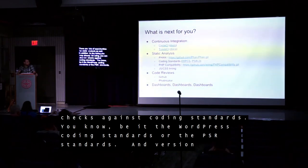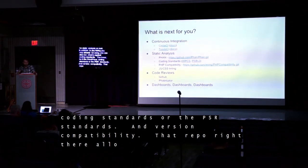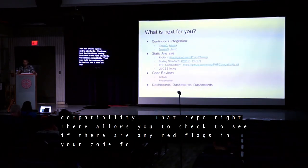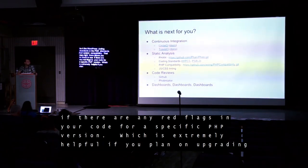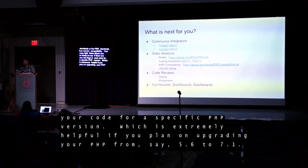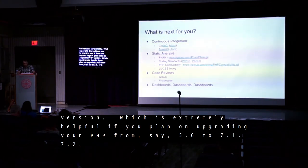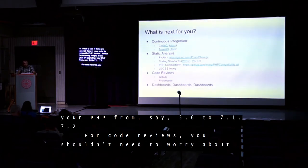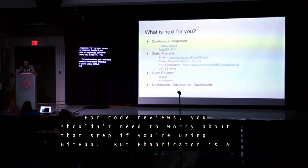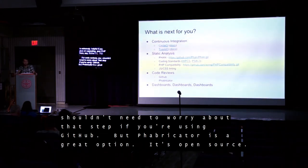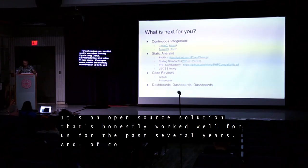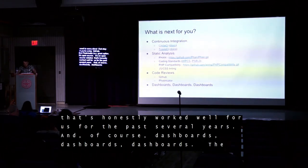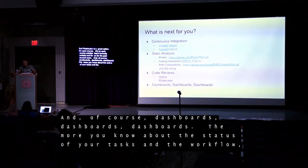For version compatibility, there's a repo that allows you to check for red flags in your code for specific PHP versions — extremely helpful if you plan on upgrading your PHP from, say, 5.6 to 7.1 or 7.2. For code reviews, you shouldn't need to worry about that step if you're using GitHub, but Fabricator is a great open-source option that has worked well for us for several years. And of course, dashboards — the more you know about the status of your tasks and the workflow, the quicker you can act to get them to done.